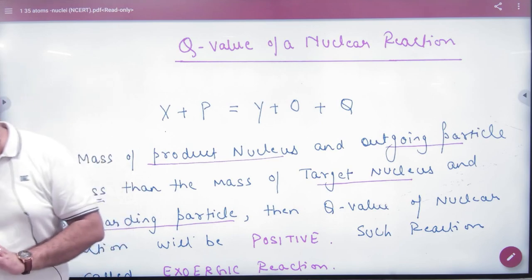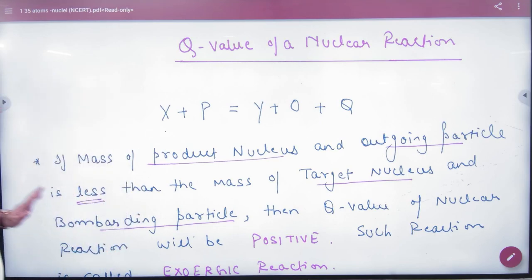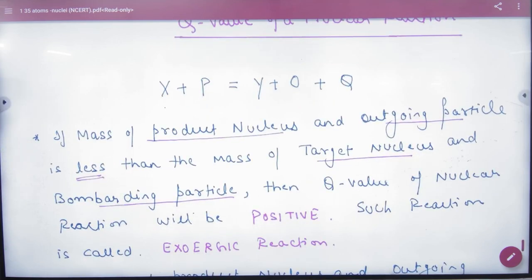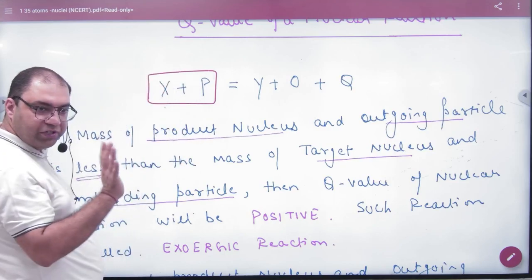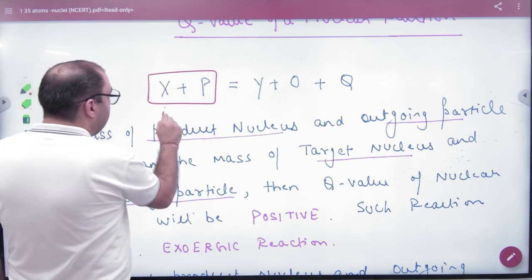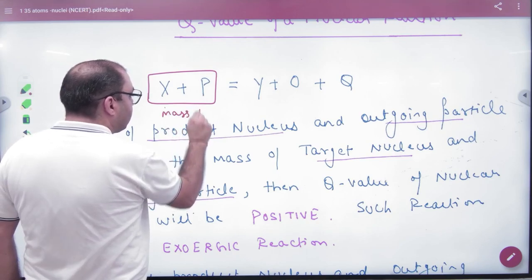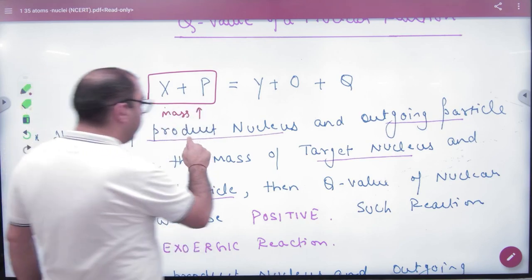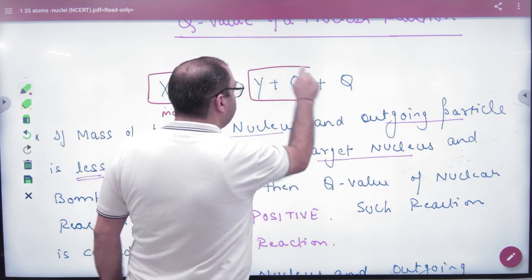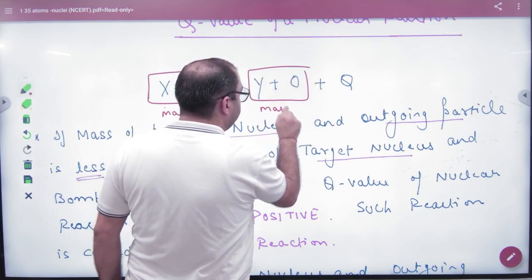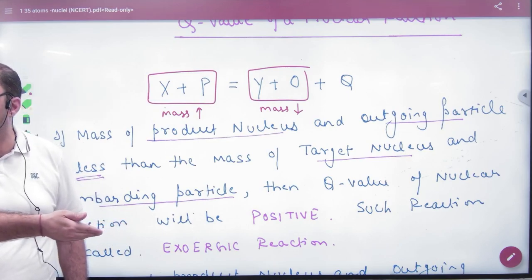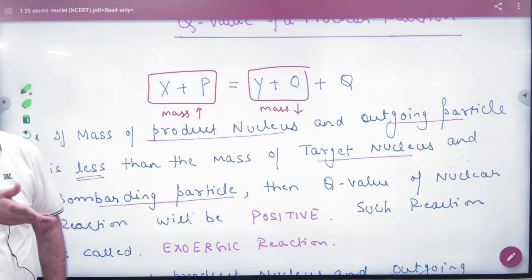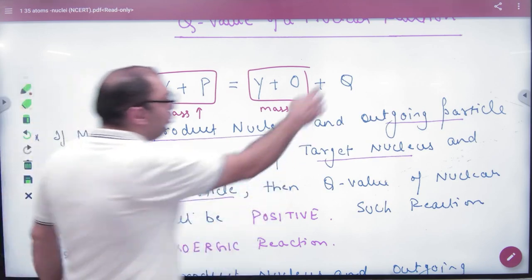In any reaction, energy can either be released or absorbed — two cases exist. If the mass of the reactant constituents is more and the product and outgoing particle mass is less, then where did the mass go? That mass was converted into energy via mass-energy equivalence, so what will the Q value be?